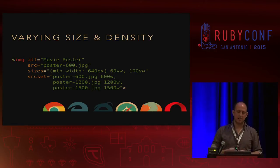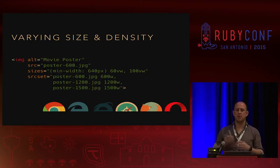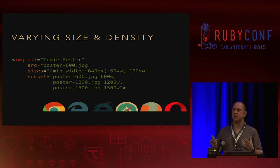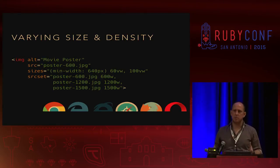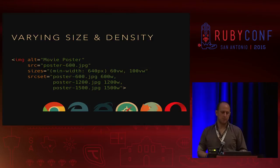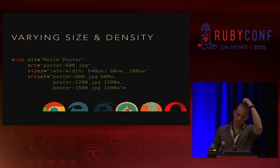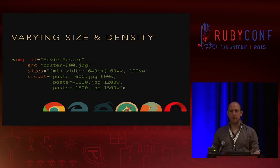Getting a little bit more complicated. Via srcset, you can see the browser knows the resources. It says: if the size of the image — the poster — is 600 browser pixels wide, load the 600 version of the JPEG. If it's 1,200 pixels wide, load the 1,200 version. The sizes attribute provides the width of the image at a given window width, like a CSS media query. In this case, if the screen has a minimum width of 640, it's going to take up 60% of the viewport width (that's what VW stands for). Otherwise it's going to take up the whole width. And old IE drops back to the src on the image tag.